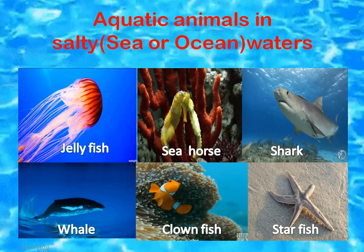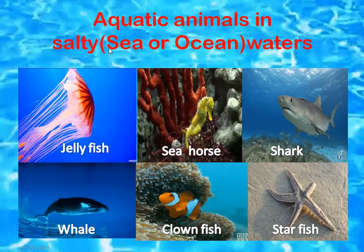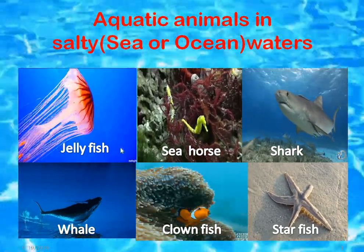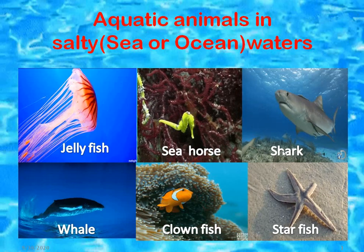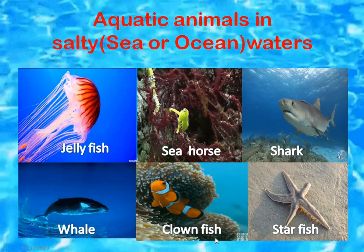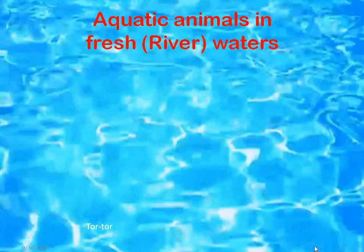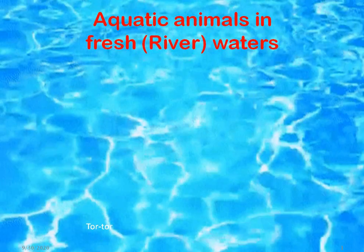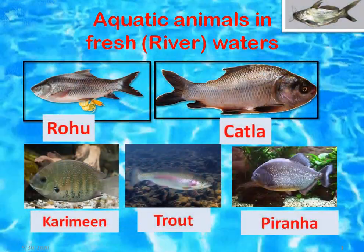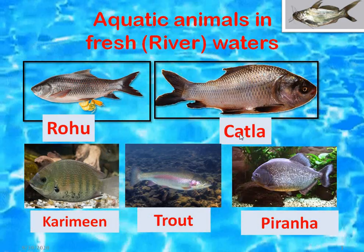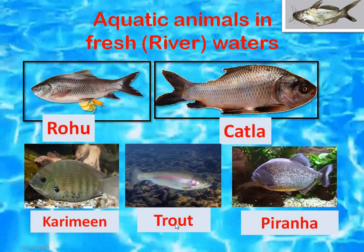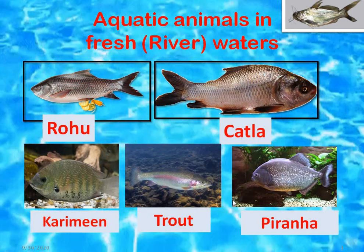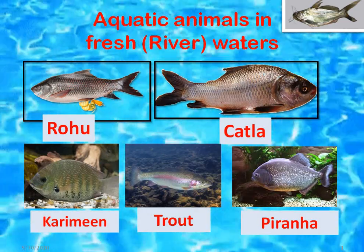Animals in the salty water or sea water or ocean water — some examples are jellyfish, seahorse, shark, whale, clownfish, and starfish. And aquatic animals which are present in fresh water or river water are rohu fish, katla, kerameen, trout, and piranha. These are few of the fish which are present in fresh water or river water.